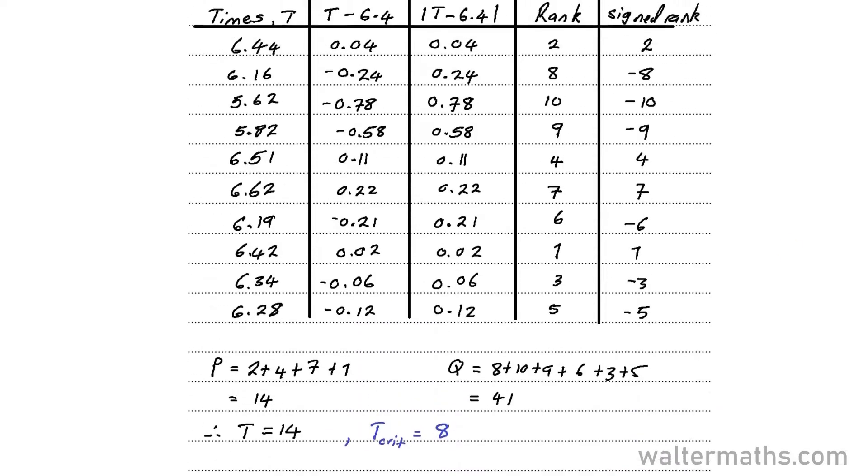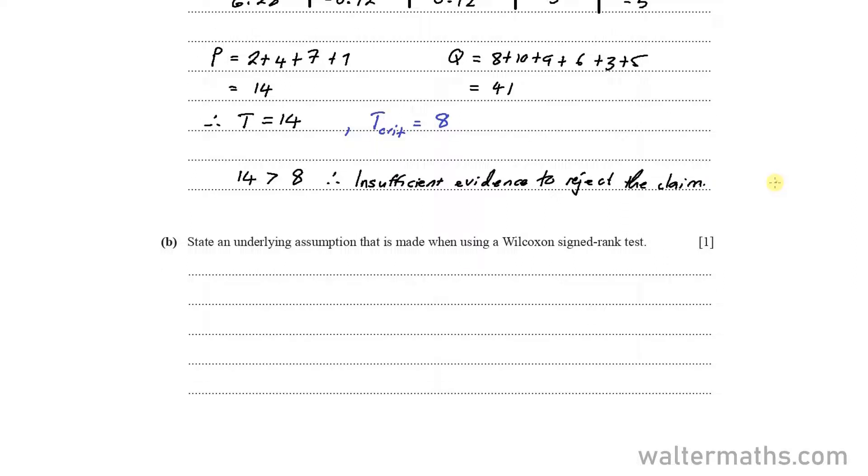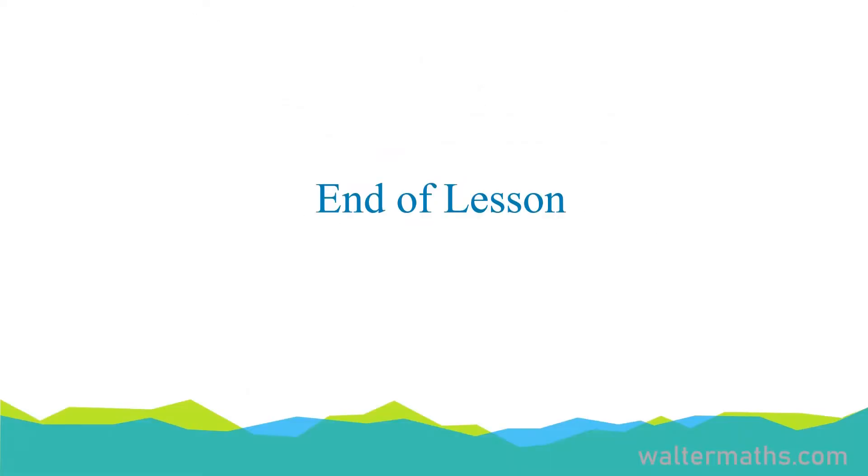Okay, so that's how we perform this test. Alright, let's go on to part B. It says, state an underlying assumption that is made when using a Wilcoxon signed rank test. Okay, so like we said, the underlying assumption for a Wilcoxon signed rank test is that the data is symmetrically distributed about the median. So that's how we can answer that part. And that's it for this question here.